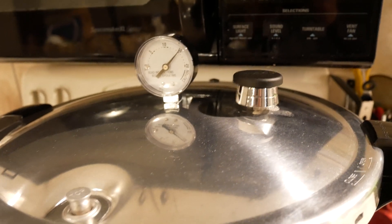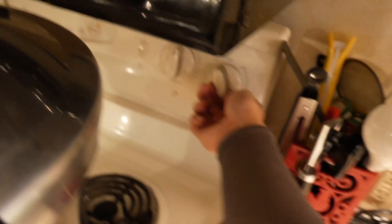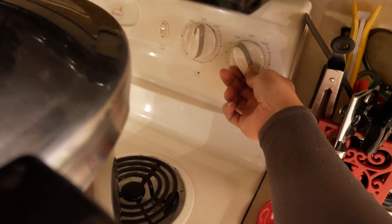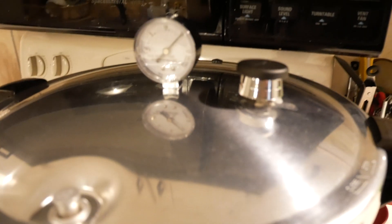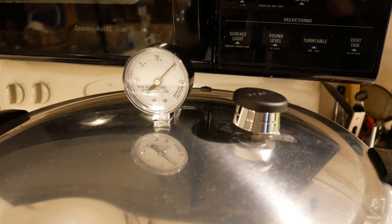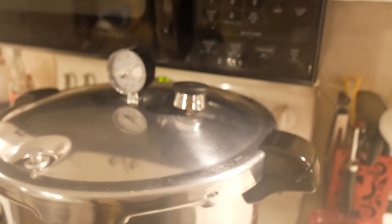Once my pressure cooker reaches 15 psi, I'll go ahead and lower the heat down to medium just to maintain it. And I'll go ahead and set a timer for 25 minutes. Once 25 minutes is up, we'll go ahead and turn off the heat and we'll go ahead and let this depressurize on its own.